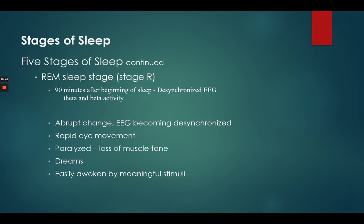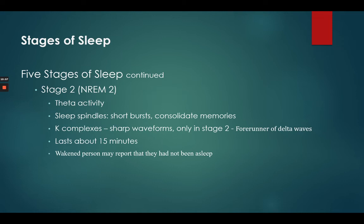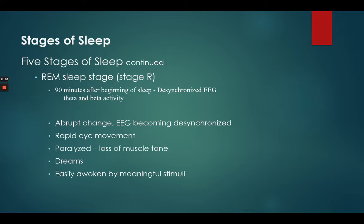The last stage of sleep is REM — this is where we dream. It starts roughly about 90 minutes after we start sleeping. REM sleep is different from stages one, two, and three, which mainly have alpha waves — the calm brain activity. REM sleep is not calm; it's beta waves, the chaotic desynchronous brain activity that looks very much like how our brain looks when we're awake and alert.